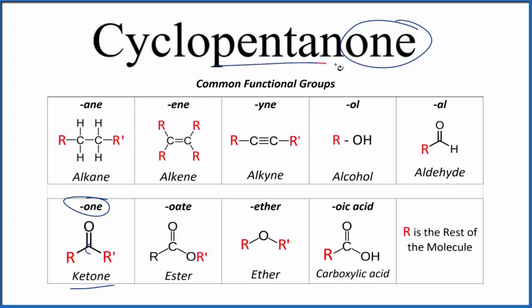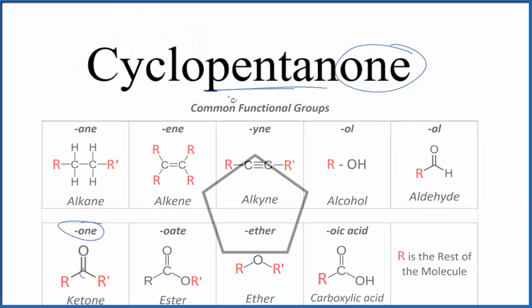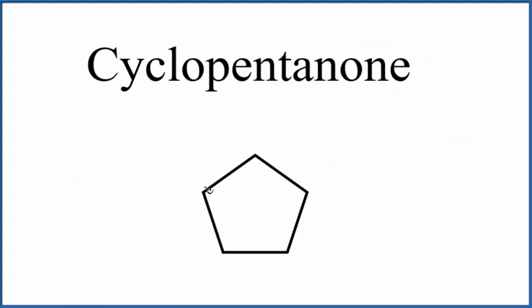Pent, that means five. So we're gonna have five carbons. And cyclo means that we have a ring. So if we put a ring with five carbons up, that'll look like this. Right now this is just cyclopentane, because it's all carbon single bonded with hydrogens around them.